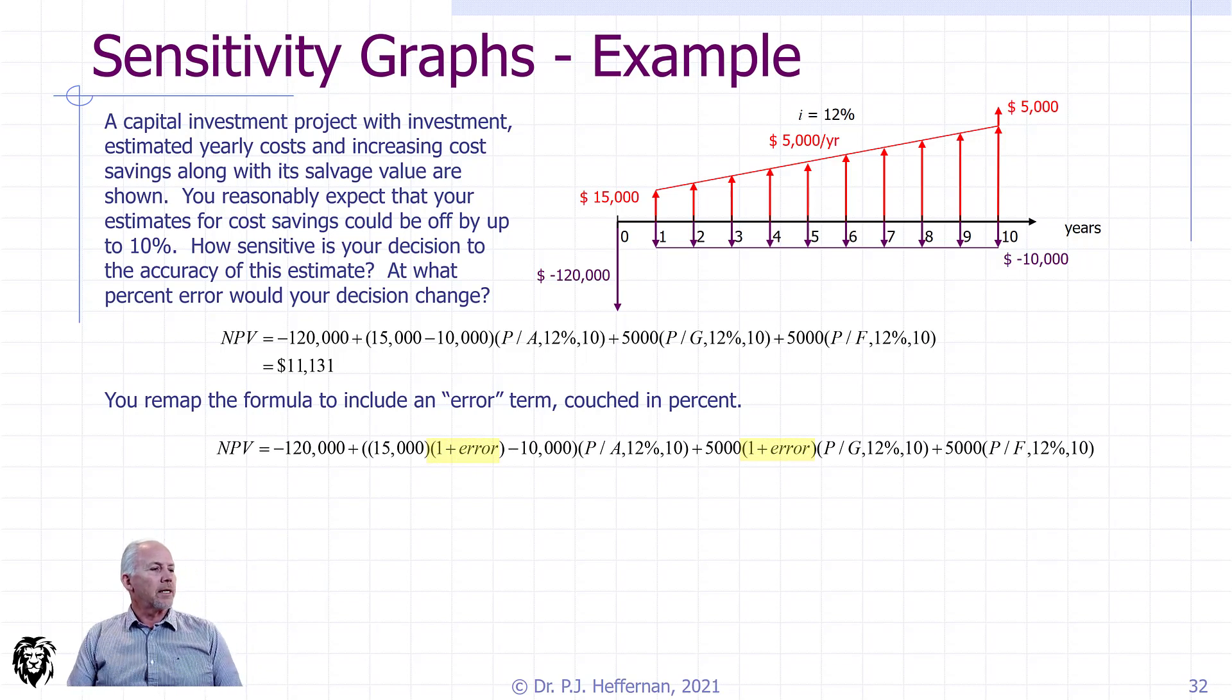We're going to add an error term. The $15,000 component of the annuity is part of that cost savings, so we're going to put in an error as a percent, one plus the error. The current net present value would be the same thing as substituting in zero for the error. And we can go plus or minus any percentage change to get a new valuation. As well as the $5,000 gradient is also part of the cost savings term, so we put in an error component there.